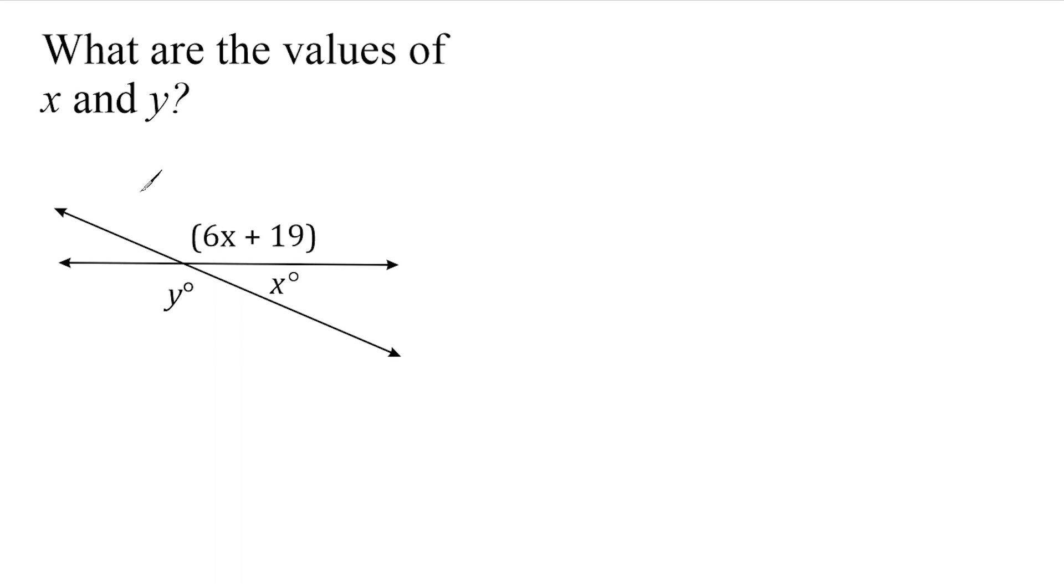Now, a couple of things that we should know about intersecting lines is that angles on complete opposite sides are equal to each other. We call those vertical angles.